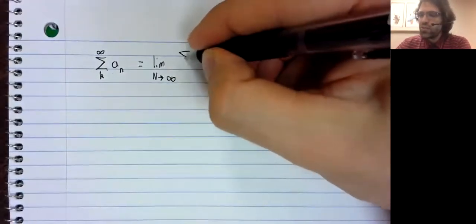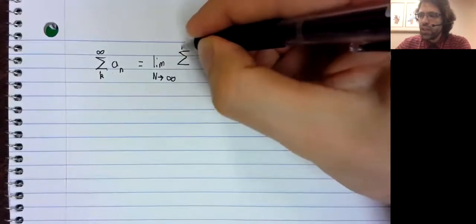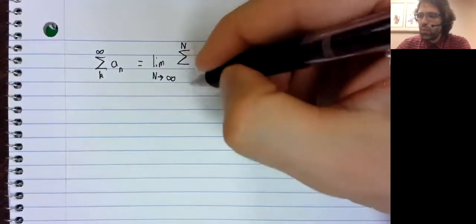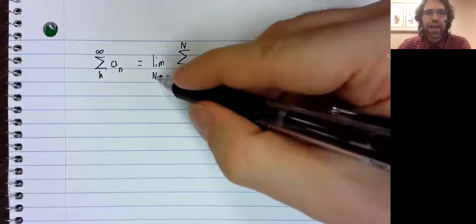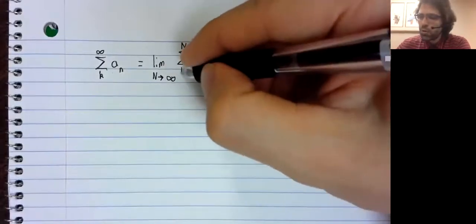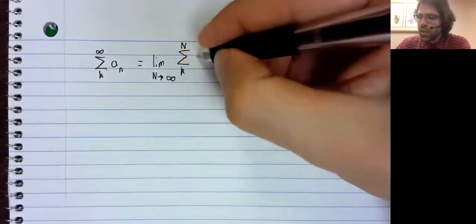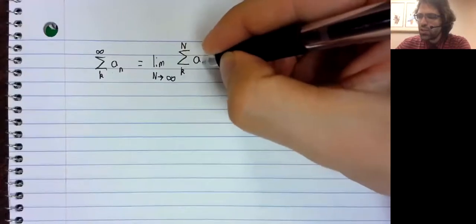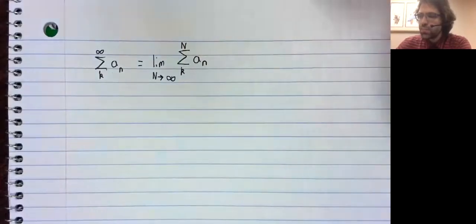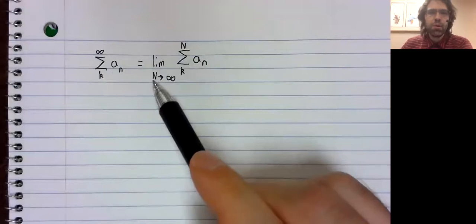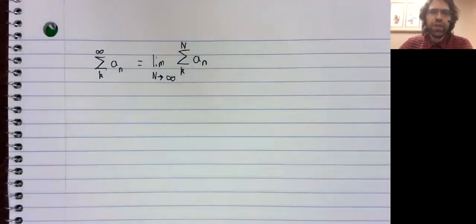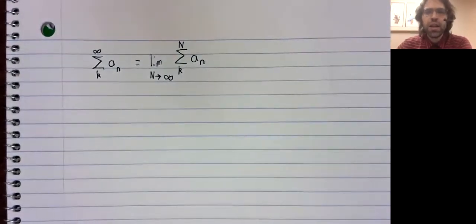We replace the infinity symbol with a finite number and take the limit as that finite number goes to infinity, and we see what happens.